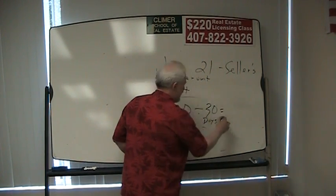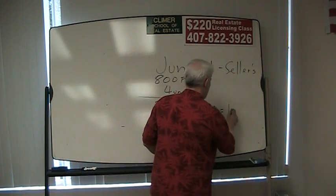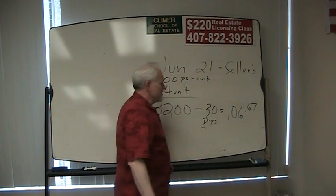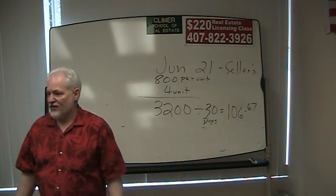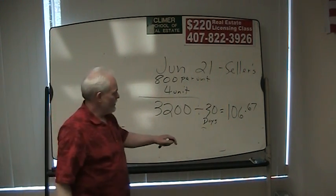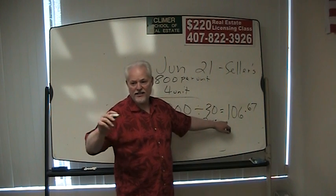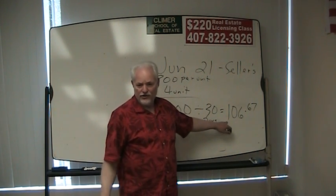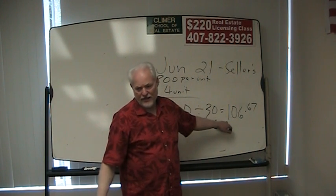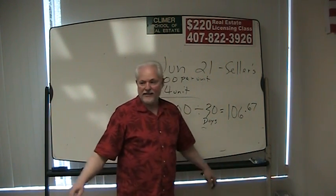We're going to divide this by 30 days. What's our daily rate? $106.67. Your calculator may show 106.66666 — just leave that number in the calculator. So you've got $106.67 per day.